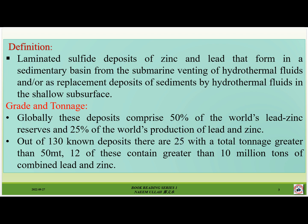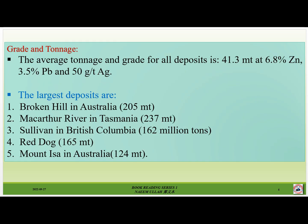Grade and tonnage: globally, these deposits comprise 50% of the world's lead-zinc reserves and 25% of the world's production. Out of 139 deposits, 25 have a total tonnage greater than 50 million tons, and 12 contain greater than 10 million tons of combined lead and zinc. The average tonnage and grade for all deposits is 41.3 million tons at 6.8% zinc, 3.5% lead.